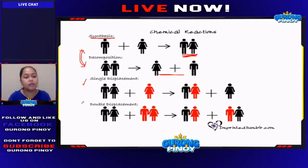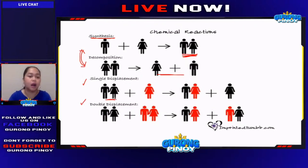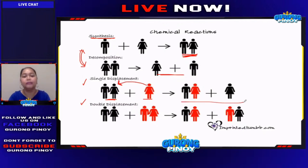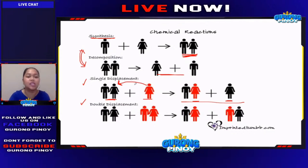Single displacement and double displacement are very related with one another. For single displacement, imagine there is a couple — a boyfriend and a girlfriend — and another girl came in and took the place of the girlfriend. After the reaction, the boy is already paired with the new girl and the ex-girlfriend is alone. That's why we call it single displacement — the new substance displaced and replaced the other.